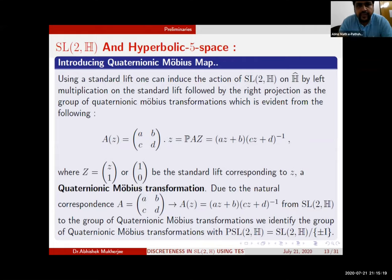Using a standard lift one can induce the action of SL(2,H) on H cap by lift multiplication on the standard lift followed by the right projection as the group of quaternionic Möbius transformations, which is evident from the following equation: P(a·z) = (a·z + b)·(c·z + d)⁻¹.